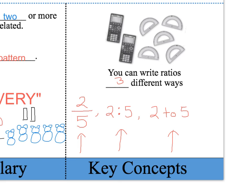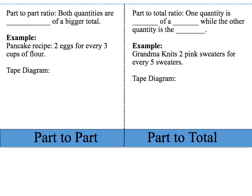We've got two different types of ratios. The first type is called a part-to-part ratio. The other type is called a part-to-total ratio. Let's discuss a part-to-part ratio first.